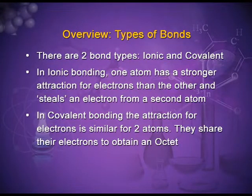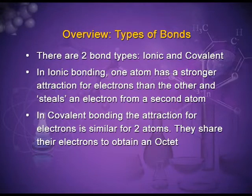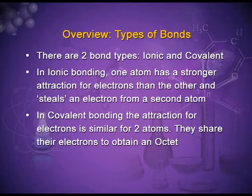There are two bond types — ionic and covalent. In ionic bonding, one atom has a stronger attraction for electrons than the other and it steals an electron from a second atom. In covalent bonding, the attraction for electrons is similar for the two atoms, and they share their electrons to obtain an octet.